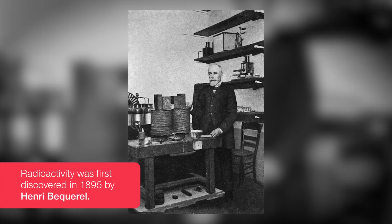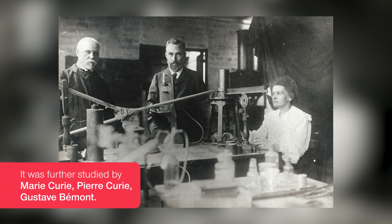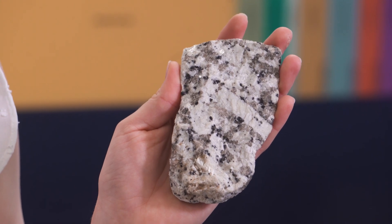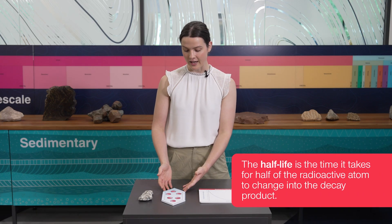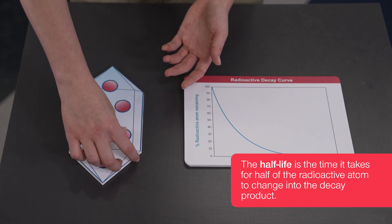But how do scientists put an exact age on a rock? They use absolute dating. In the late 1890s, scientists discovered radioactivity, where some atoms in nature spontaneously change or decay to more stable atoms over time. When molten rock cools, tiny minerals form, and during this process some of these radioactive atoms become trapped inside the minerals. Over time, these atoms slowly decay into more stable atoms. Scientists know how long this process takes for each radioactive atom, and refer to this as its half-life — the amount of time it takes for half of the original radioactive atom to change into the decay product.